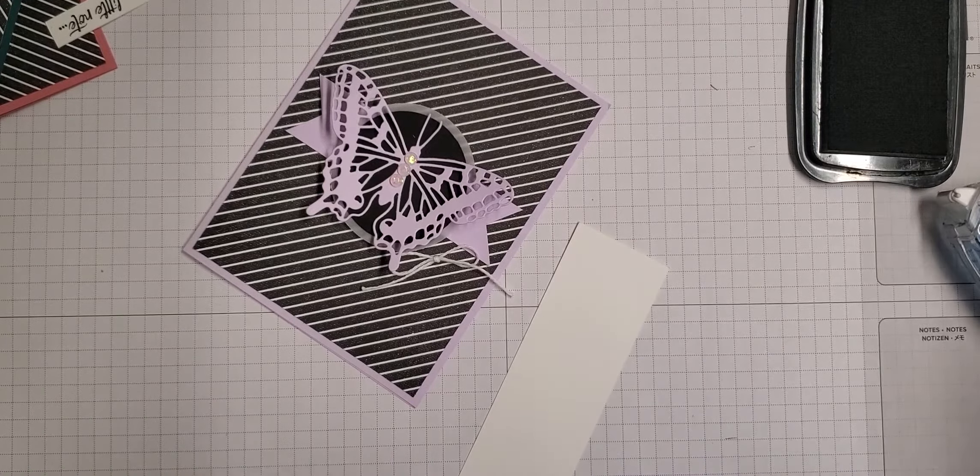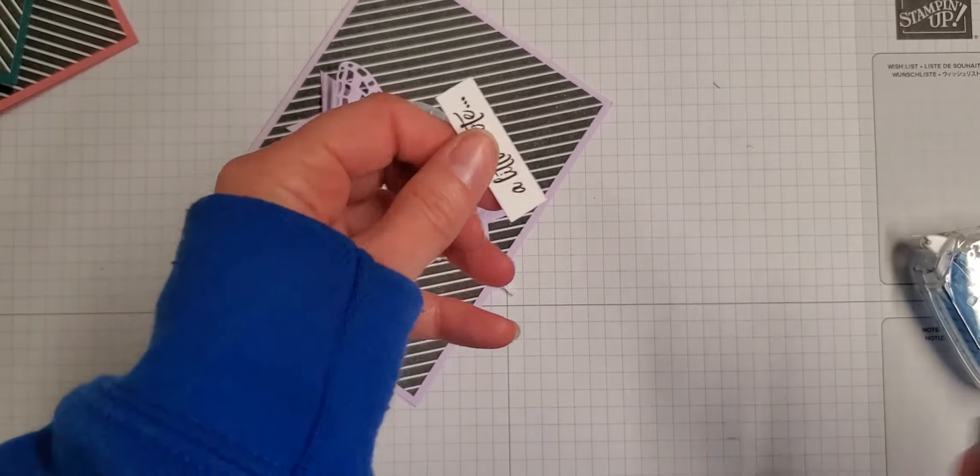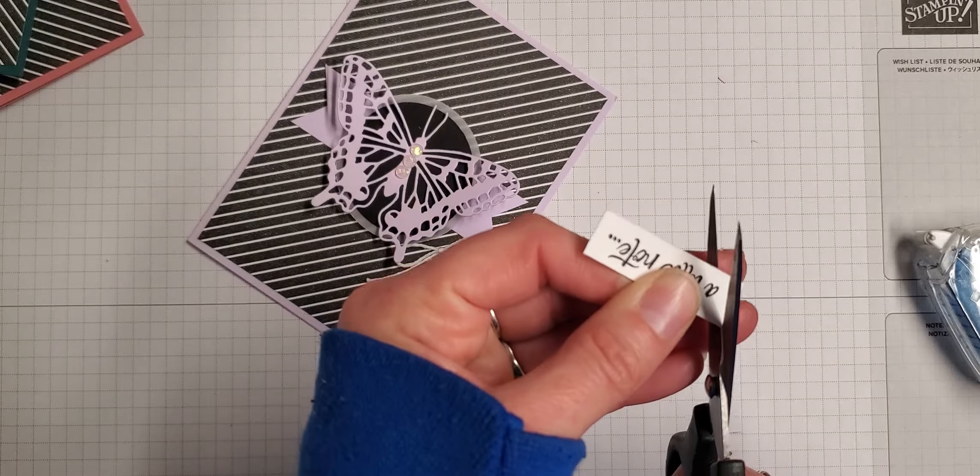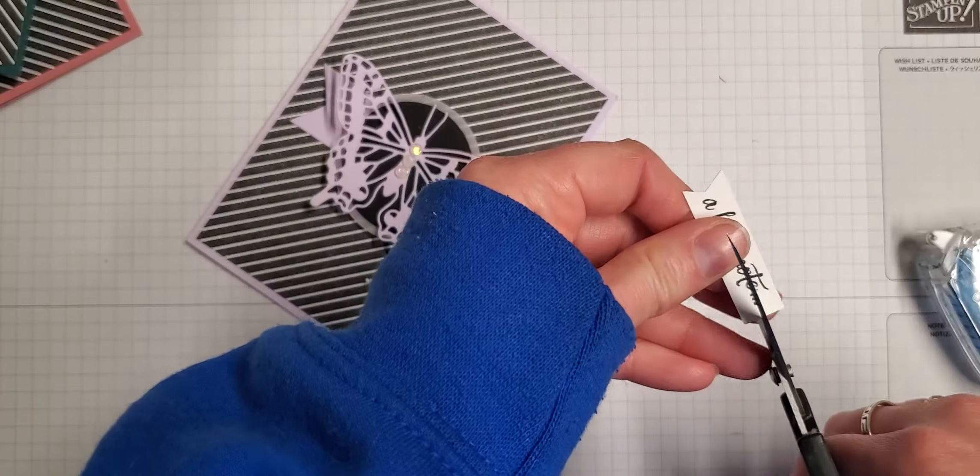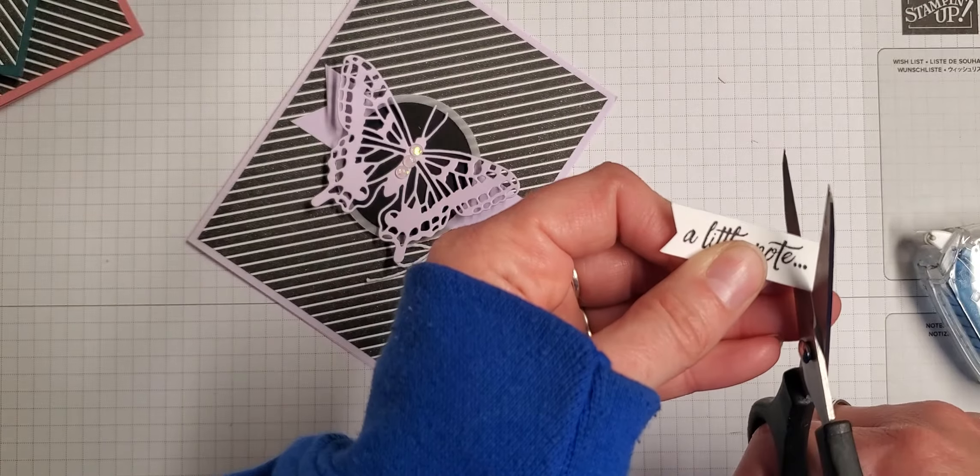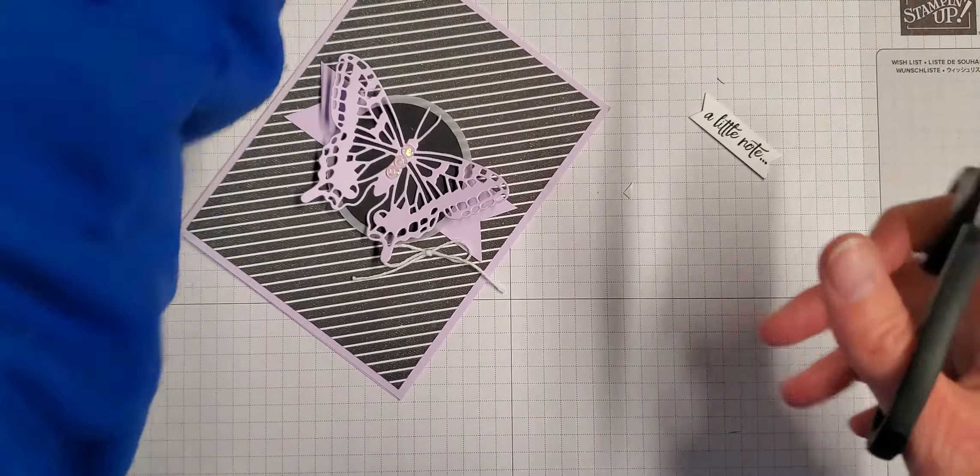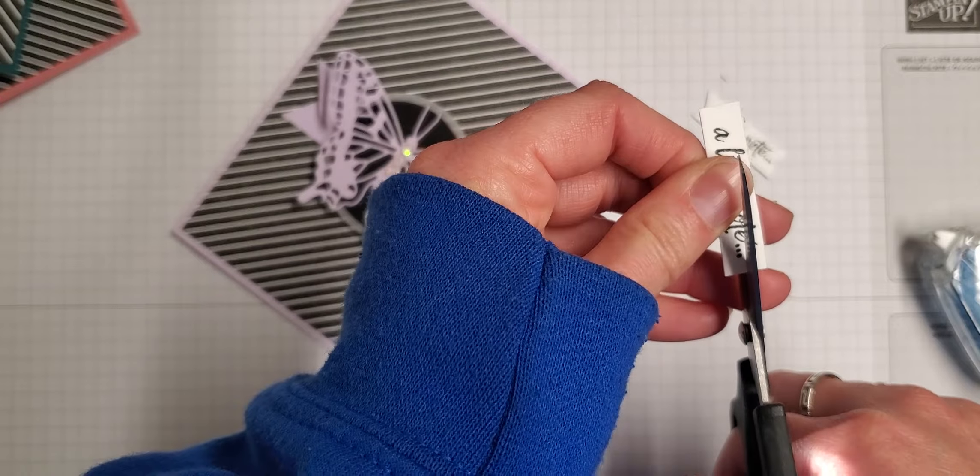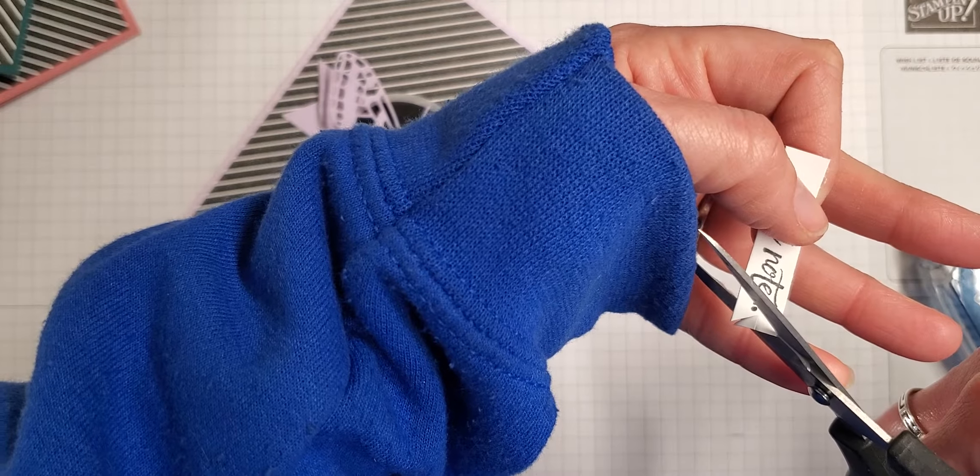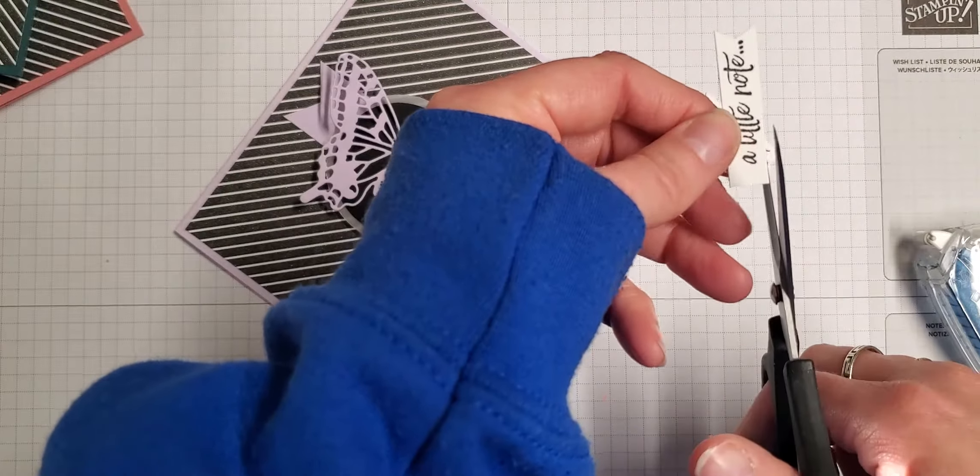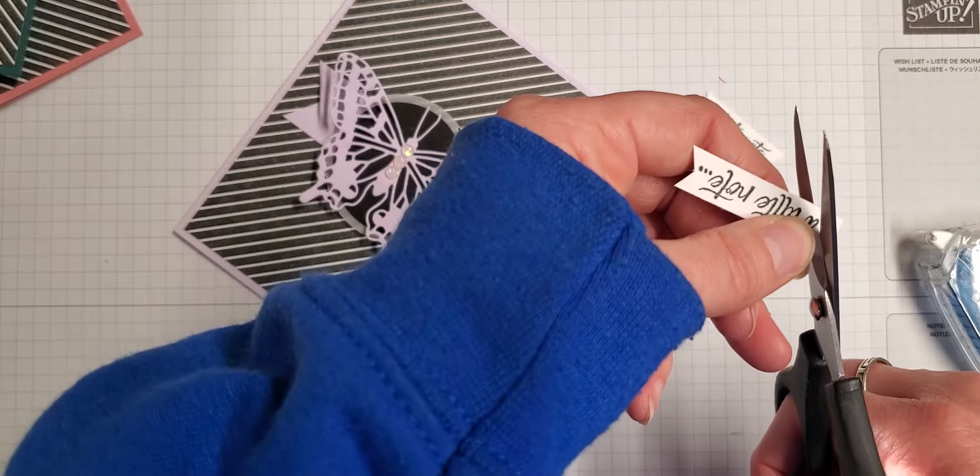Okay, so then what I did is I just took my paper snips and cut little banner ends on each side. Didn't leave a whole lot of excess on the sides of these, so they'll just be small little banners. And again, one of the things I should have done in advance, but these are still coming together really quickly.